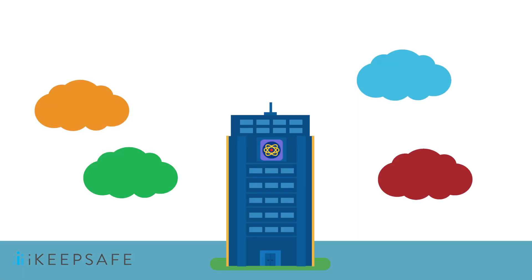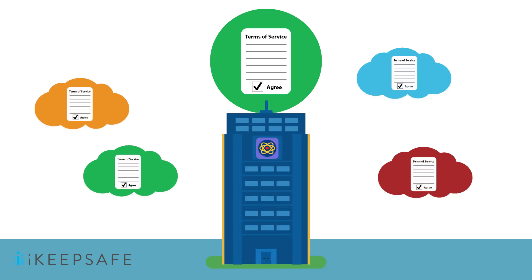Many technology companies employ third-party services, which can often access user data. The last thing you need to ensure is that the product operator has requirements in place with these third parties that require them to follow the rules to which you and the vendor have agreed. All you need to remember is that any terms the company must follow must also be followed by their third-party service providers.